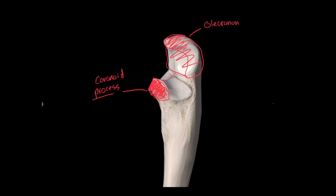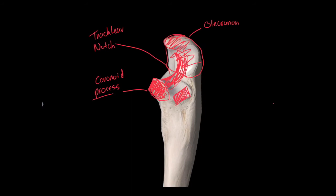We also have a notch right here that reminds me of an ice cream scooper. This notch is going to be called the trochlear notch of the ulna, because it's the notch that goes around the trochlea of the humeral condyle. We have a second notch — on a model or real bone you can feel it. This notch is where the head of the radius sits, so we call this the radial notch of the ulna.